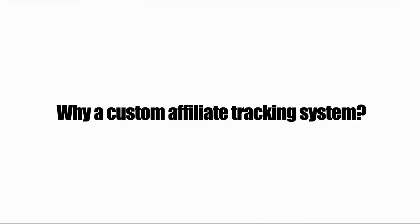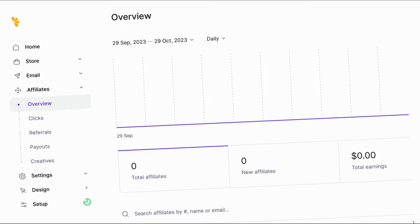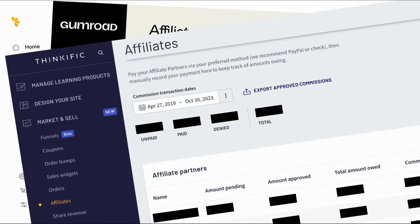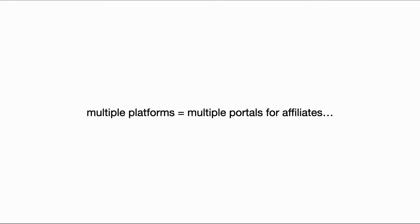Why do I even need an affiliate tracking system? If I'm just a guy selling online courses, pretty much every platform supports affiliates already — Lemon Squeezy does it, so does Gumroad, and Thinkific supports it as well. But as I've switched payment and hosting platforms, my affiliates had to switch with me, and as I've added more courses to my catalog I've ended up using multiple platforms and therefore multiple affiliate portals.